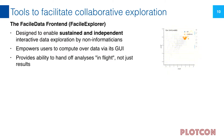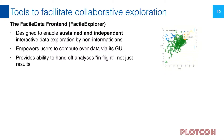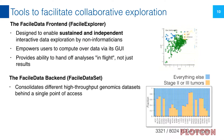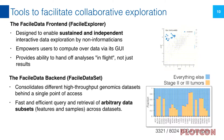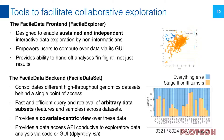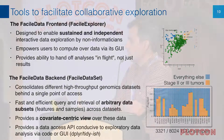The other thing we're working to enable is the ability to hand off analyses in flight from one scientist to another and back. This allows people to iterate on analyses — not just providing results, but a point from which someone else can continue. To enable this front end, there's a back end called the FASIL data back end. One implementation is the FASIL dataset, which consolidates different high-throughput genomic datasets behind a single point of access. It provides fast and efficient query and retrieval of arbitrary data subsets — features and samples — and a covariate-centric view that's more conducive to exploratory data analyses, in a dplyr-ish, tidy-ish way.